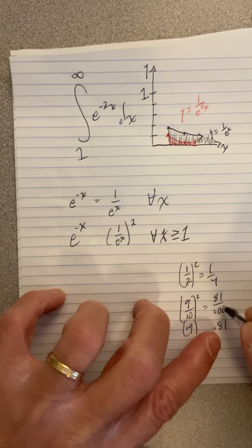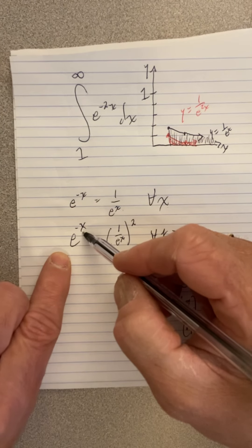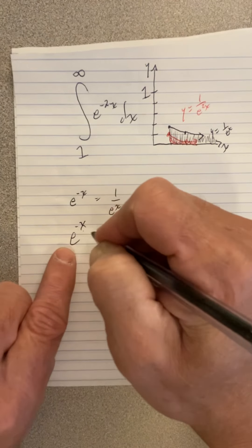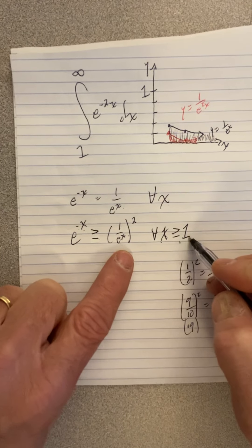So that means that this side over here, since this side is getting smaller, this side is now bigger than or equal to this side for all x greater than or equal to 1.